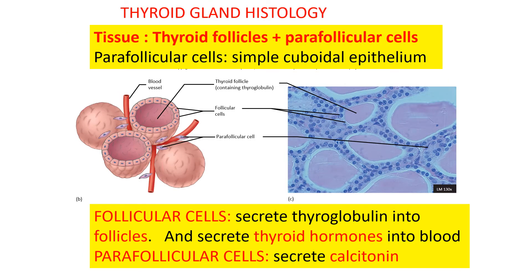Histologically speaking, the thyroid gland consists of structures called follicles or thyroid follicles, which contain the storage form of thyroid hormones. Surrounding these follicles are simple cuboidal cells called follicular cells. Follicular cells make thyroid hormone and secrete a storage form of it into the follicle.